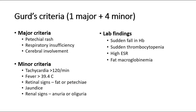Whereas the minor criteria include tachycardia more than 120 per minute, fever more than 39.4 degrees, retinal signs, jaundice, and renal signs. The laboratory findings are sudden fall in hemoglobin, sudden thrombocytopenia, high ESR, and fat macroglobulinemia.